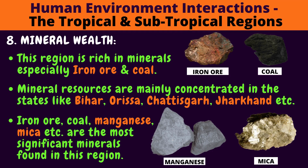Mineral Wealth: This region is rich in minerals, especially iron ore and coal. Can you see the pictures? Mineral resources are mainly concentrated in states like Bihar, Orissa, Chhattisgarh and Jharkhand. Iron ore, coal, manganese and mica are the most significant minerals found in this region.